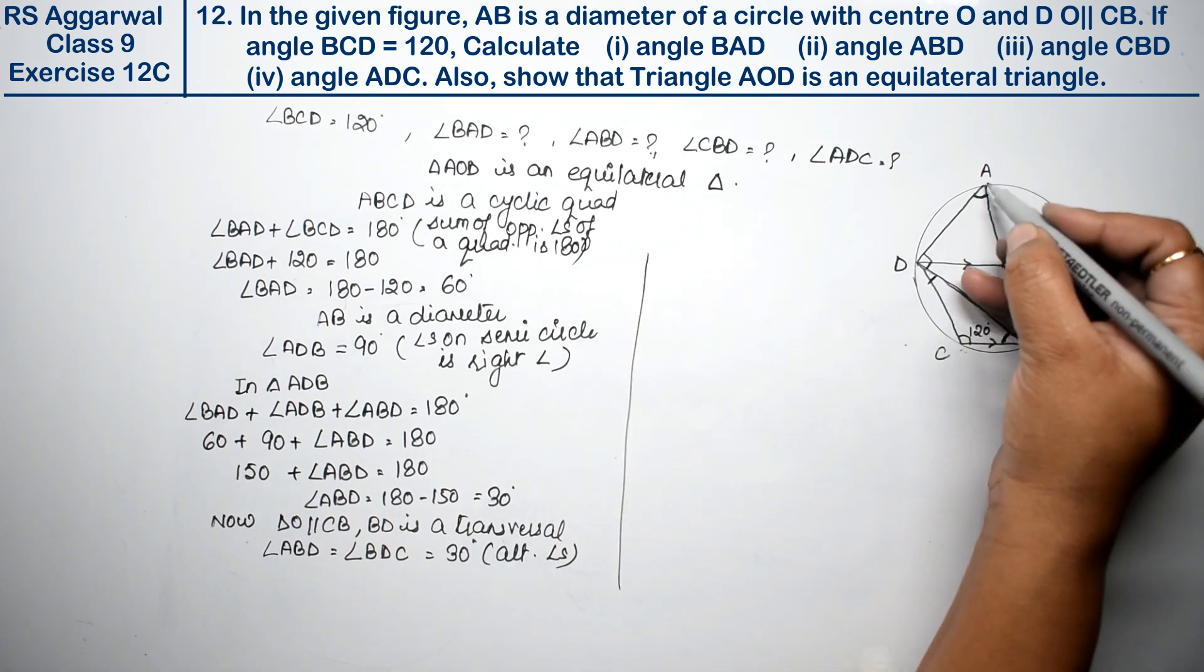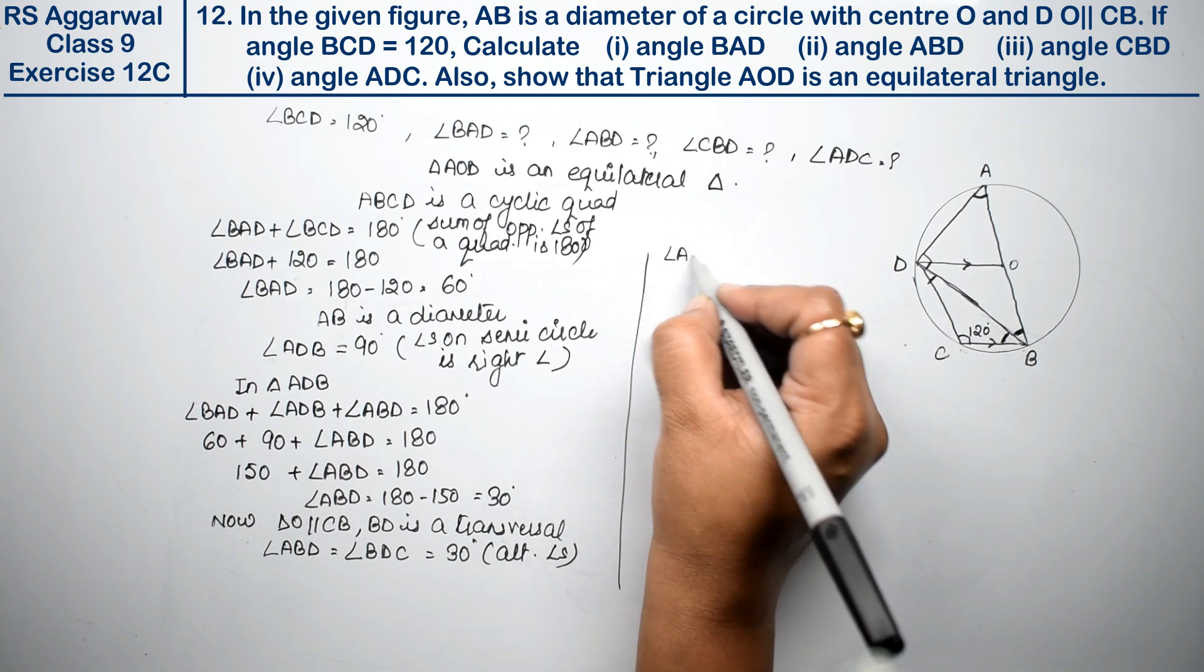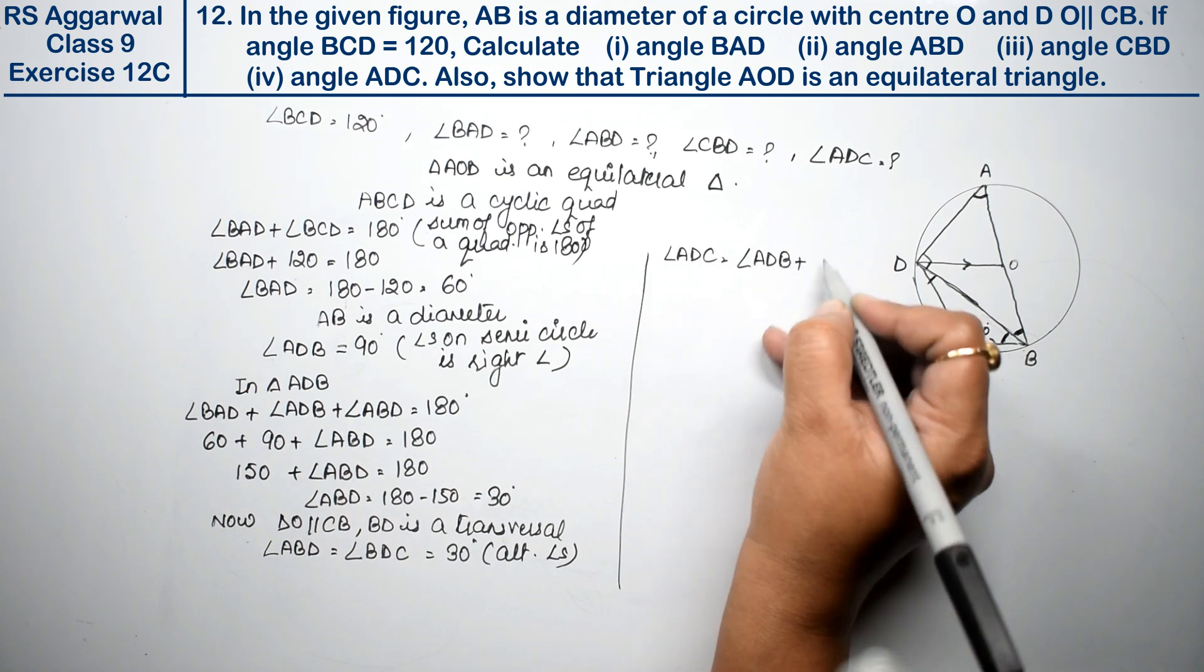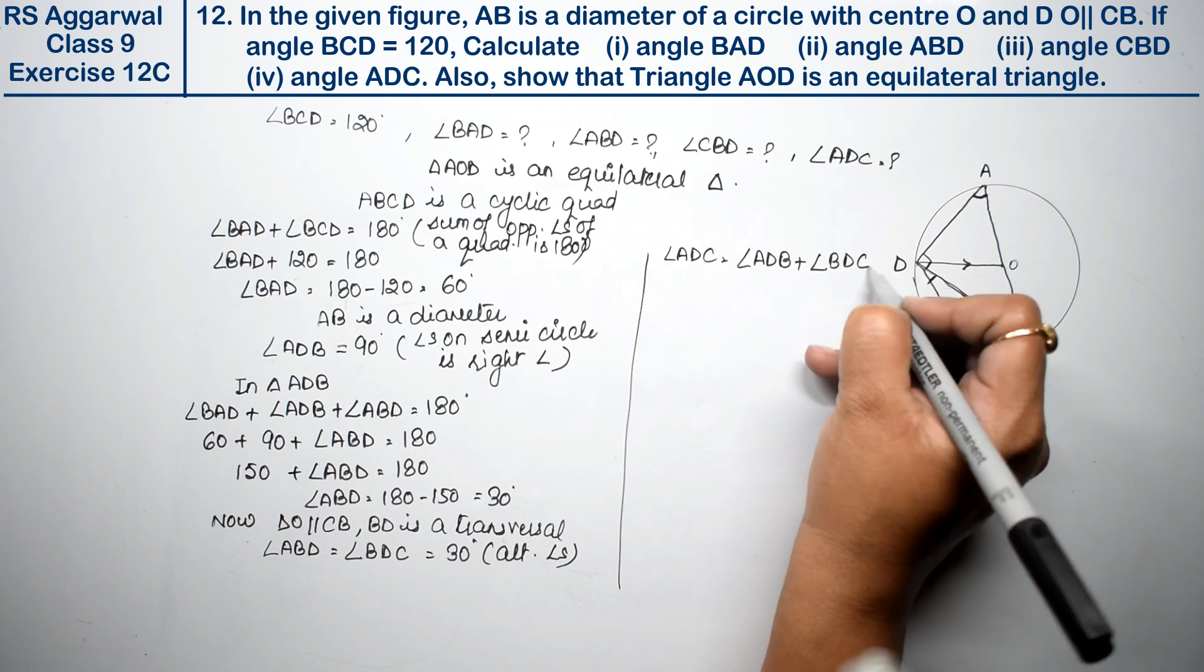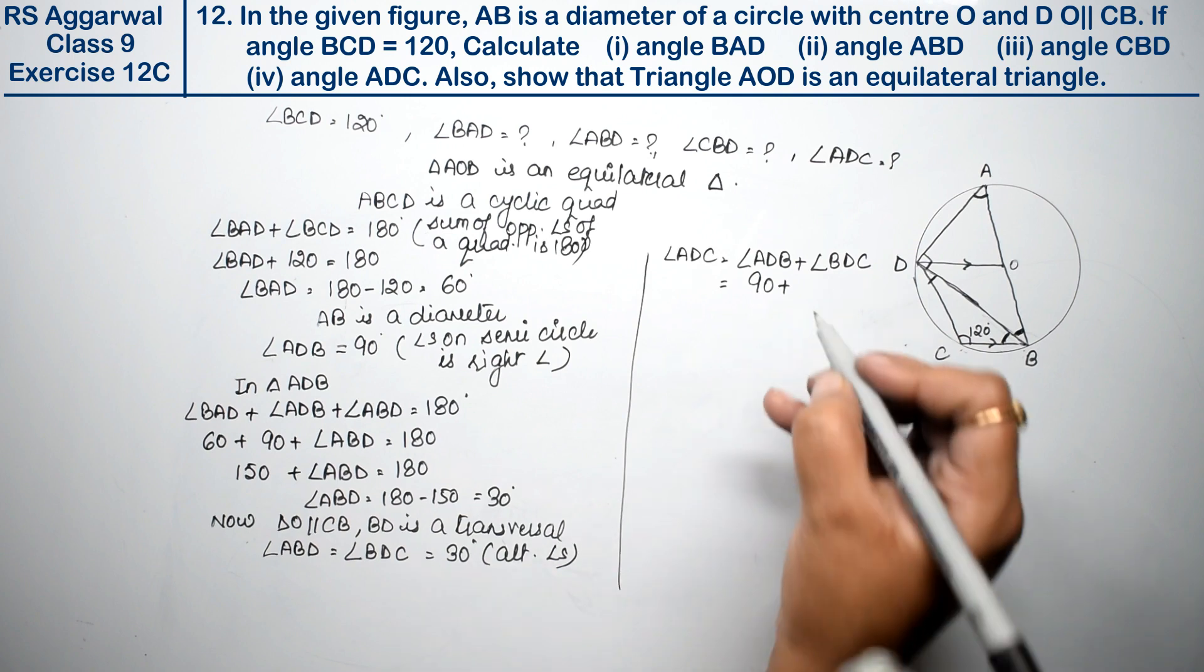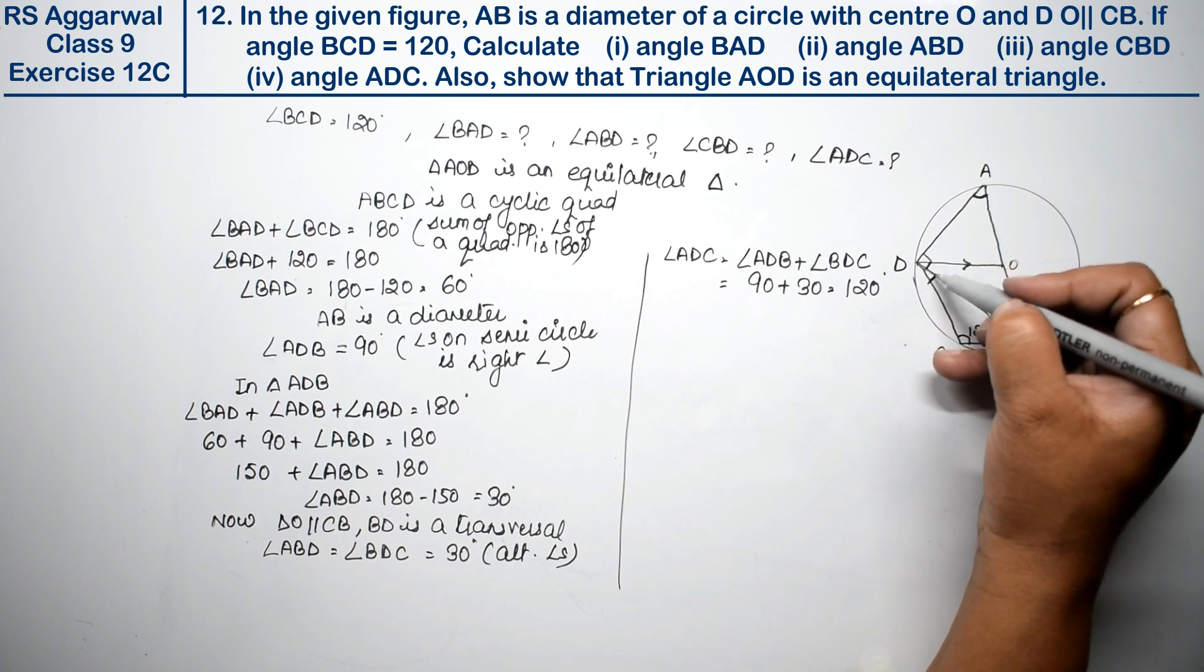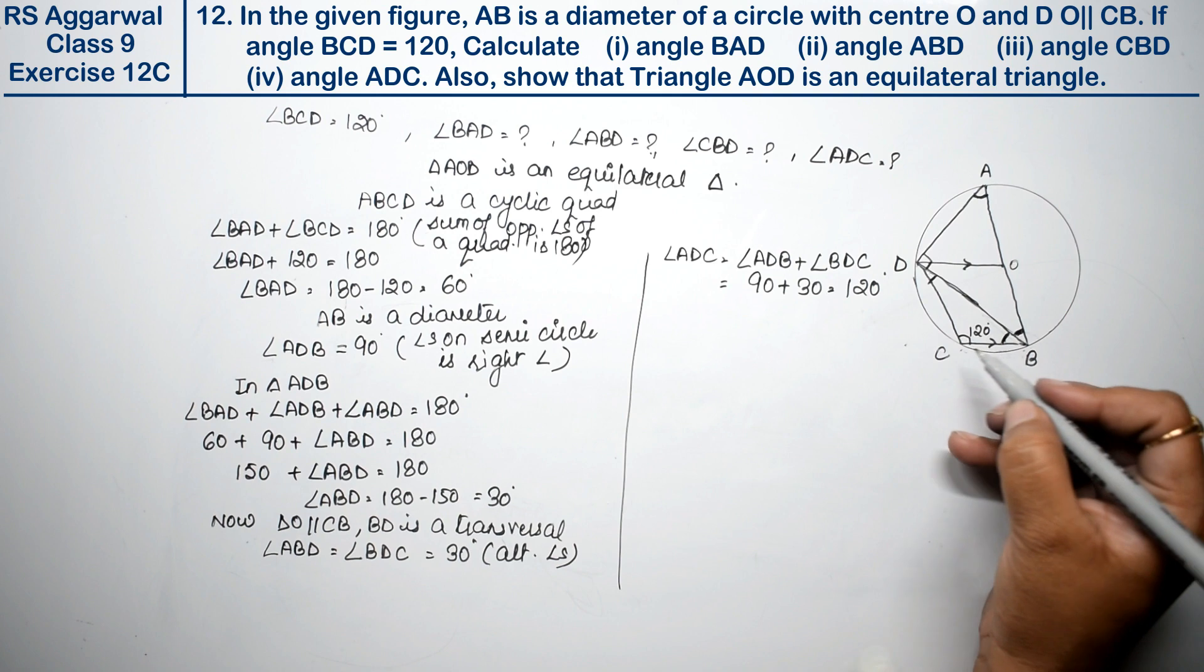To find angle ADC, we add angle ADB plus angle BDC. ADB is 90 degrees and BDC is 30 degrees, so the total is 120 degrees. The whole angle ADC is 120 degrees.